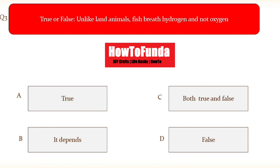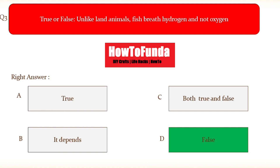Question number three is true or false: unlike land animals, fish breathe hydrogen and not oxygen. Option A true, option B it depends, option C both true and false, option D false. The correct answer is false — fish also breathe oxygen, not hydrogen.